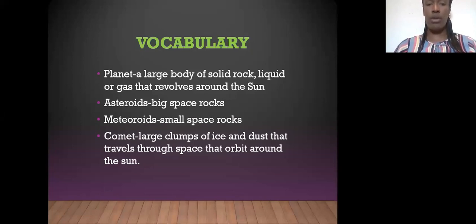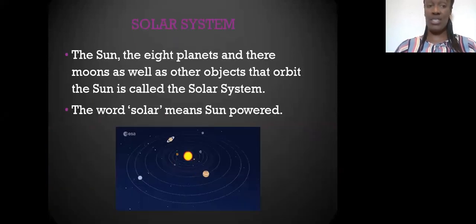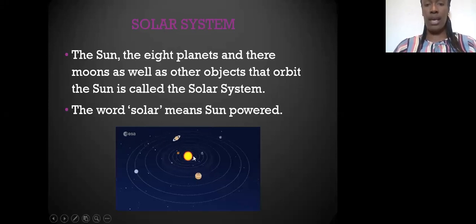What is the solar system? The Sun, the eight planets and their moons, as well as other objects that orbit the Sun is called the solar system. The word solar means Sun power. The most important part of the solar system is the Sun, as you can see is in the center of the solar system.